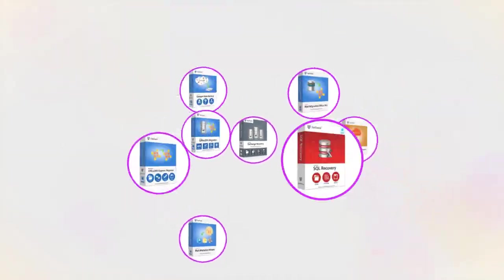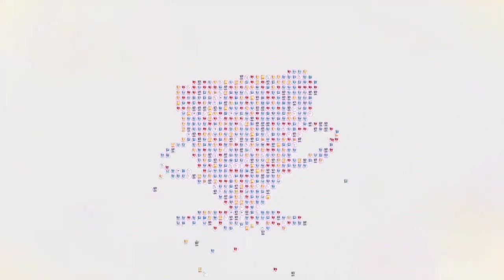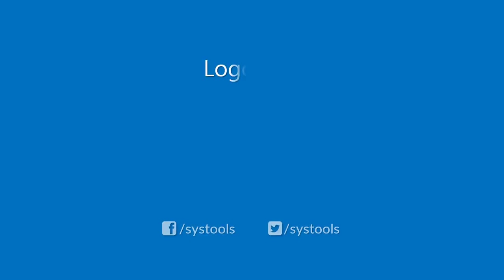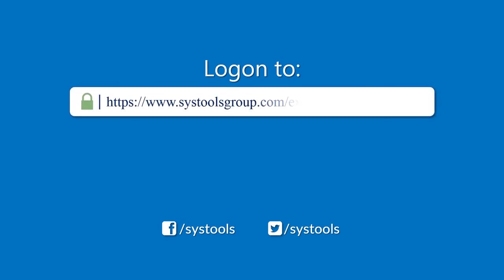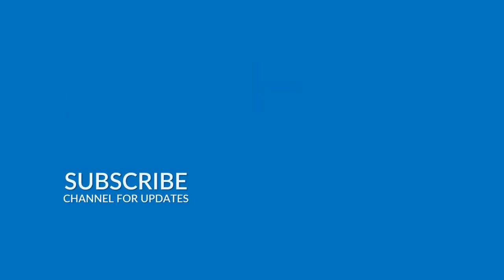Now let's see the output file location. Open your Office 365 destination account. Here you can see the exported mailboxes in hierarchical order. And that's it — hope you enjoyed the video. Log on to the given product page for more details and purchasing the product. For any queries, email us at support@SysToolsGroup.com. Thank you for watching.